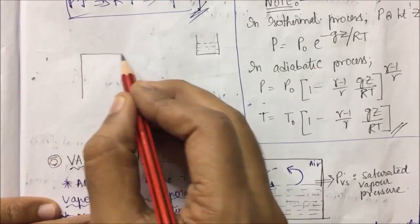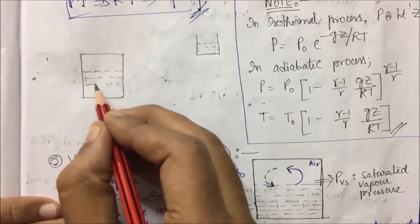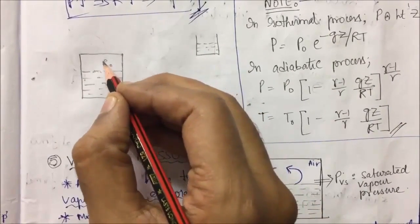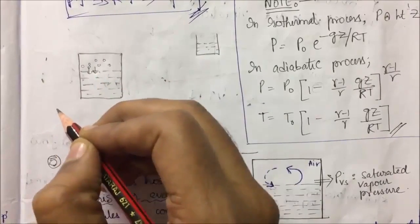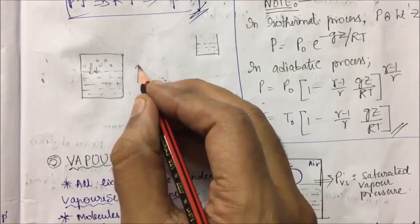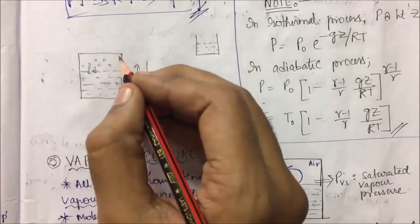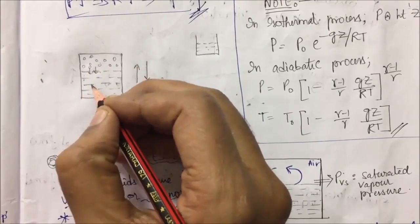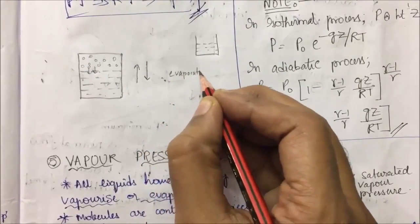Take a closed container and partially fill it with fluid. The fluid will try to evaporate and form gaseous molecules. These gaseous molecules exert partial pressure on the liquid, while also trying to condense back into liquid. Initially, evaporation rate is high and condensation is low, but as gaseous molecules accumulate, condensation rate increases. After some time, a state is reached where evaporation equals condensation.